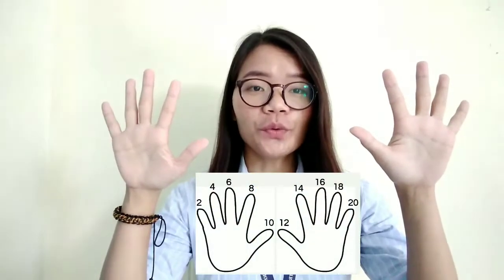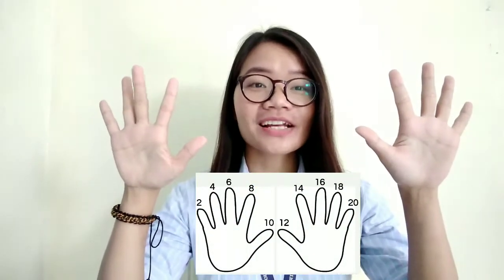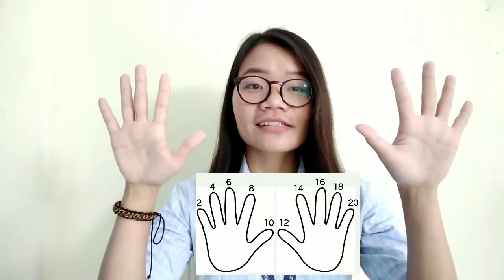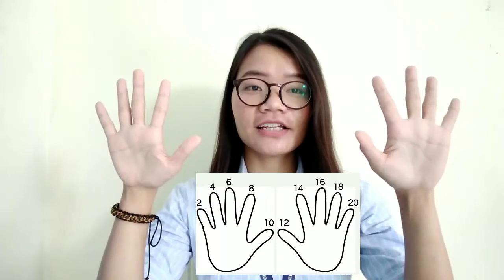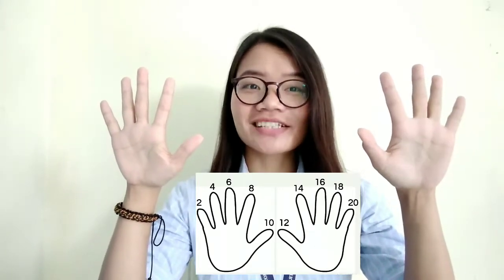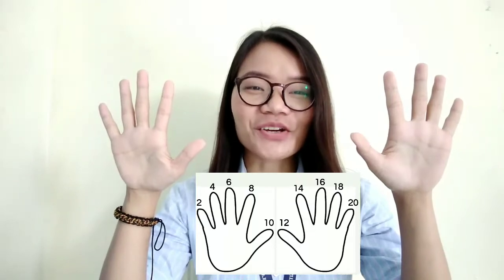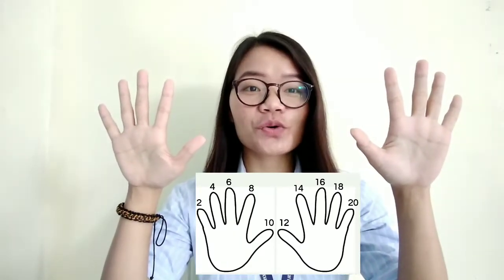Hello students, this time we're going to learn about multiplication 2 using skip counting. Because this is multiplication 2, we count by 2. We use our fingers here, and it will be like this: 2, 4, 6, 8, 10, 12, 14, 16, 18, 20. We count by 2.